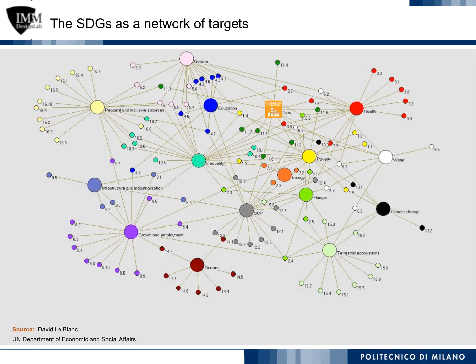In the map of the Sustainable Development Goals, or SDGs, as a network of targets illustrated by David LeBlanc, the 16 SDGs are represented as broader circles with differing colors, while targets are figured by smaller circles. Around each SDG, target numbers are linked only to that related goal, giving rise to radial structures around them.